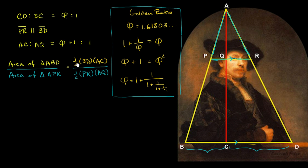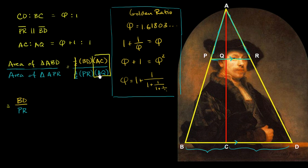Now, we were given the ratio AC to AQ, which is phi plus 1 to 1. So AC over AQ equals phi plus 1. Now we need BD over PR — the ratio of the base of the larger triangle to the base of the smaller triangle. What might jump out at you is that the larger triangle and the smaller triangle are similar triangles.